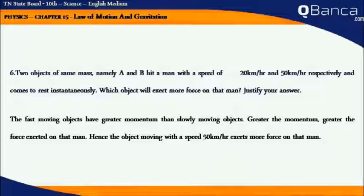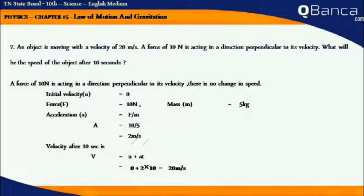Justify your answer. The fast moving objects have greater momentum than slow moving objects. Greater the momentum, greater the force exerted on that man. Hence the object moving with a speed of 50 km per hour exerts more force on that man.